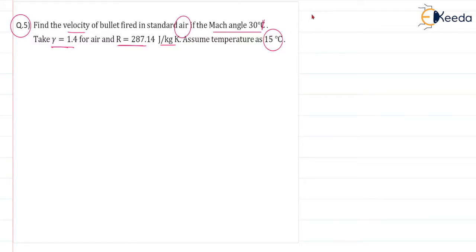So first of all, we write down the given data. Mach angle is given, alpha equal to 30 degrees, and R characteristic gas constant R equal to 287.14 joule per kg Kelvin.